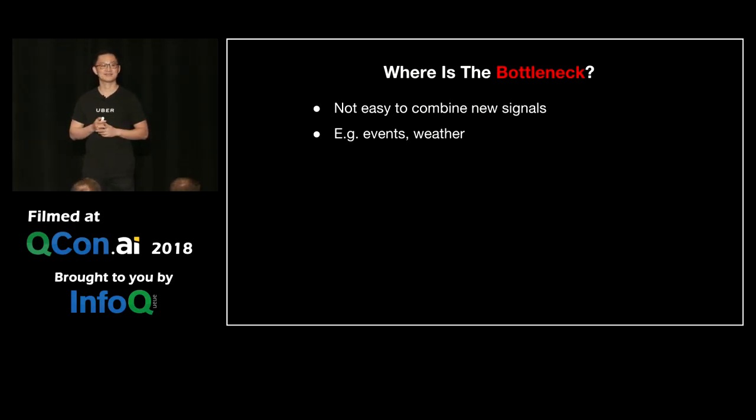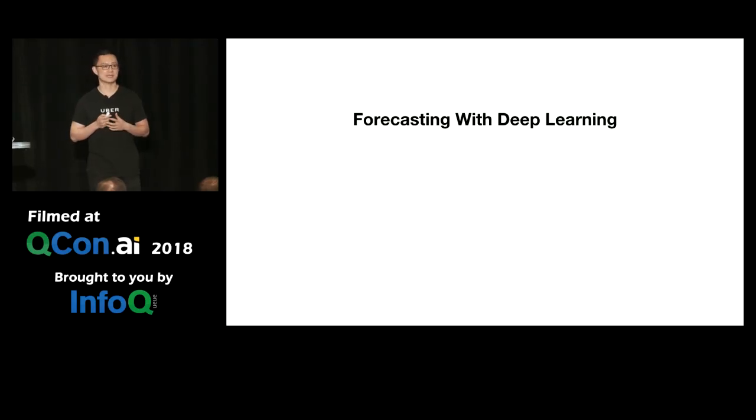But we decided to move on. There's got to be a bottleneck, right? The bottleneck, the real bottleneck is it's really not easy to incorporate new signals. For example, what if I want to incorporate the weather? What if there is a huge game in the city that will jack up the demand? What if I want to have not so periodical but still regular patterns that I want to decode and incorporate? In that case, we need more powerful methods, which brings to the next algorithm we tried, forecasting with deep learning.